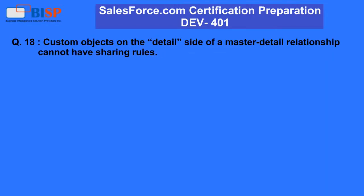Question 18: Custom objects on the detail side of a master detail relationship cannot have sharing rules. A. False. B. True.